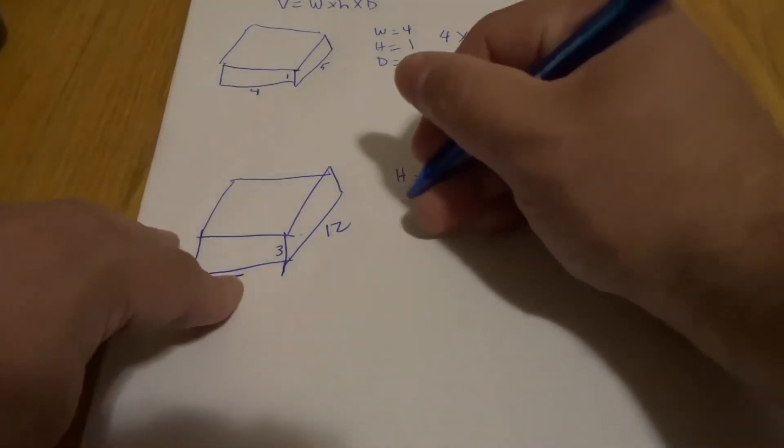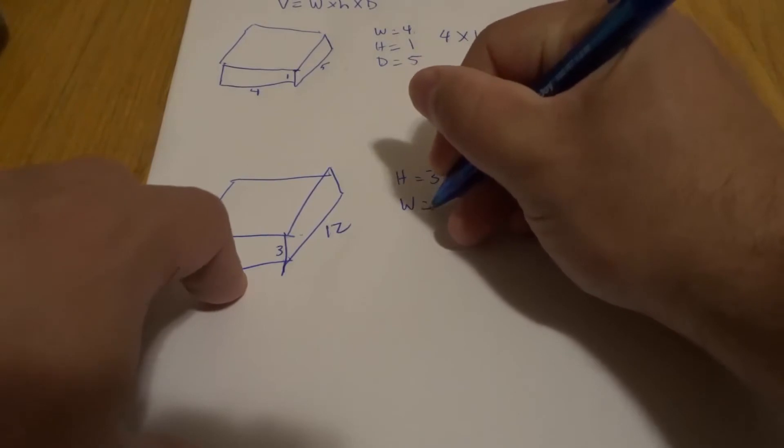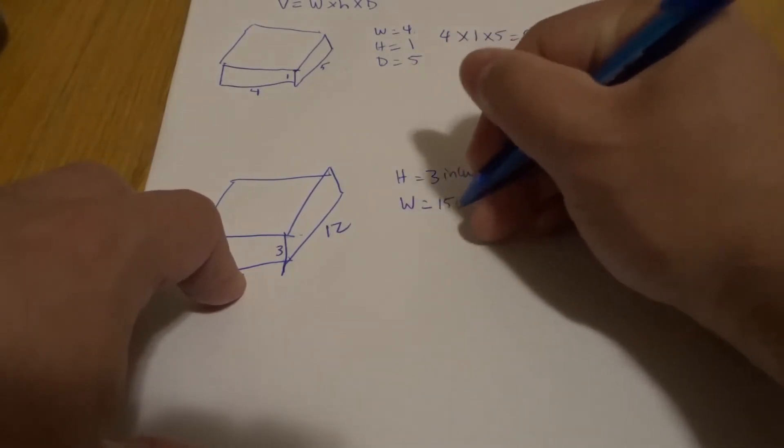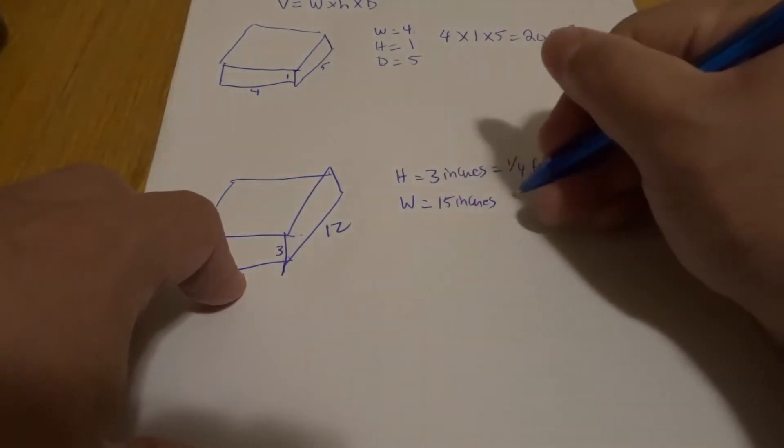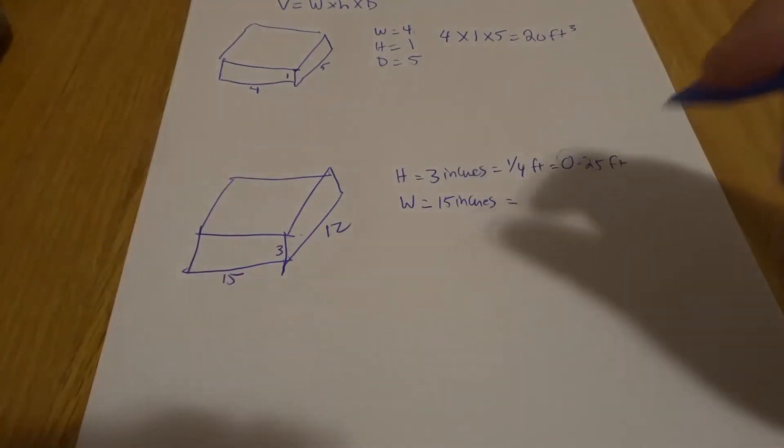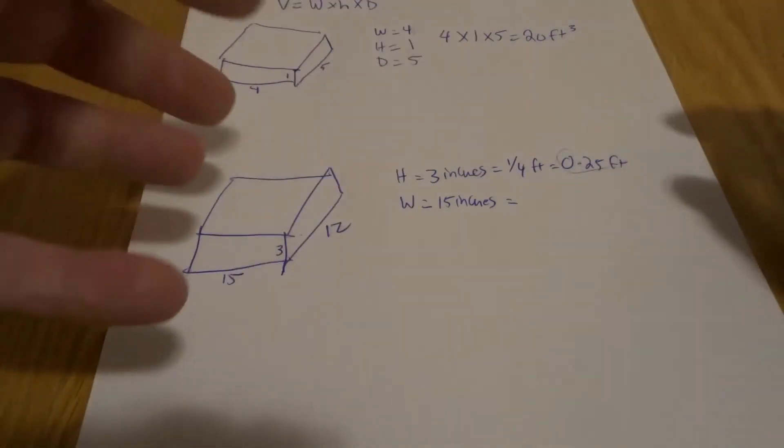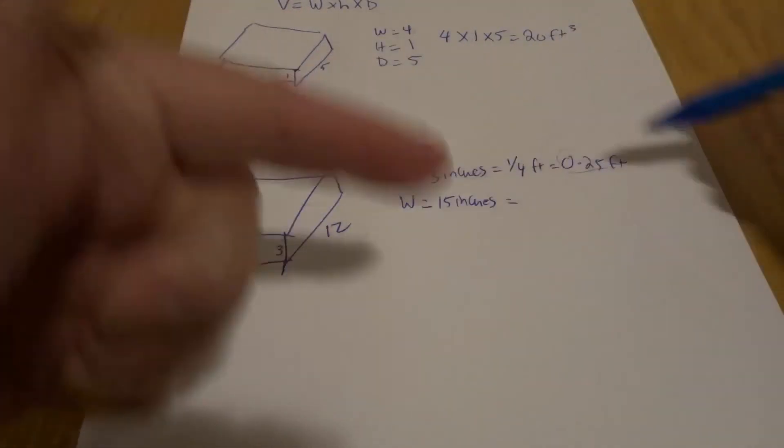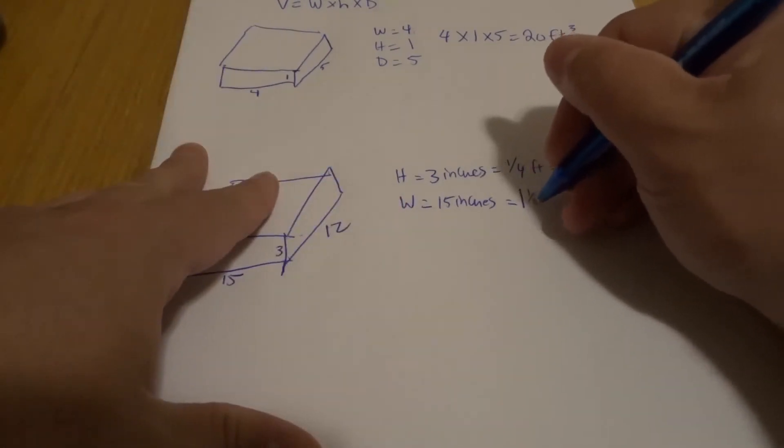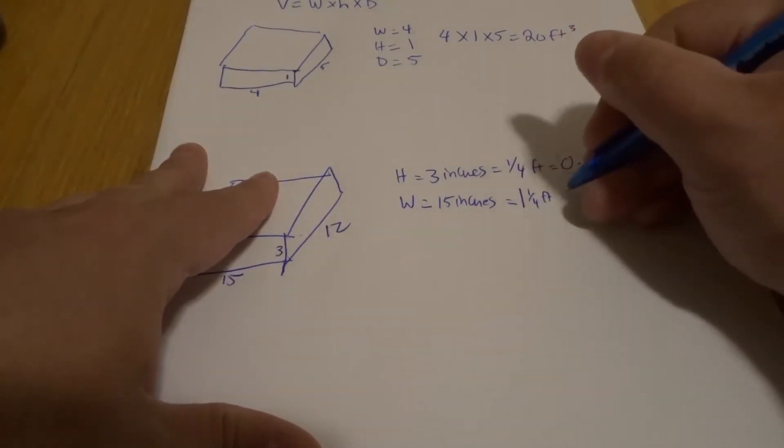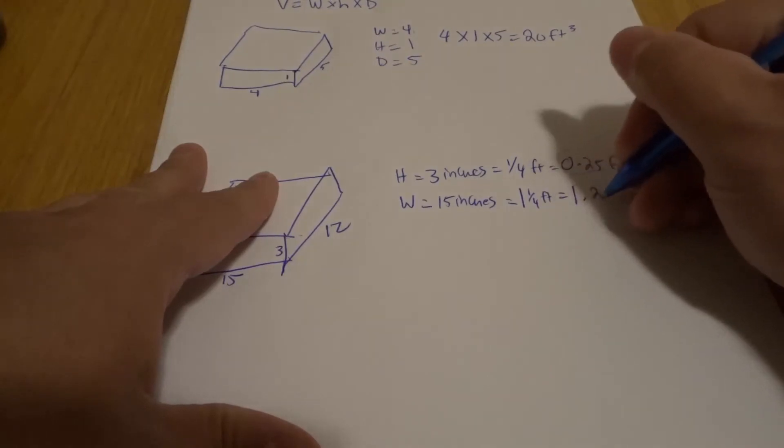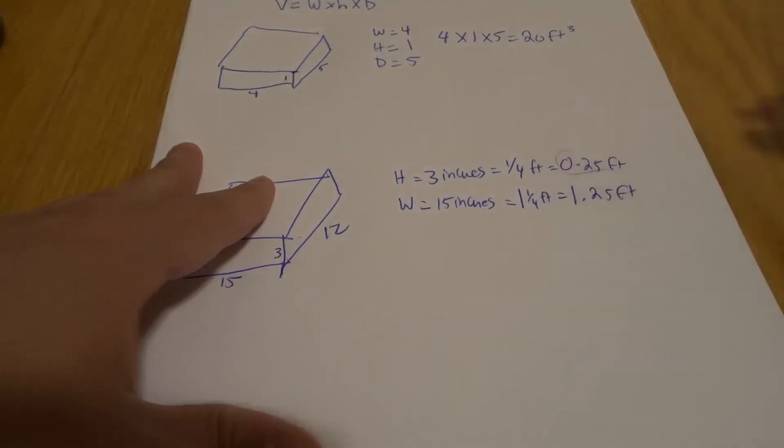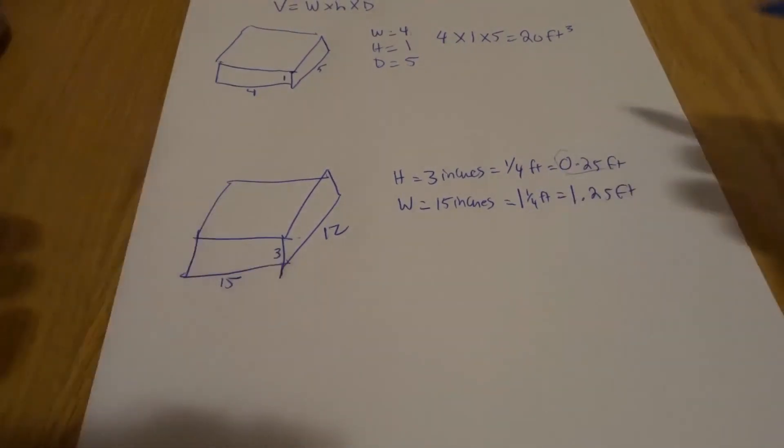Next we're going to go with our width. Our width is 15 inches, which is actually more than a foot, because a foot is 12 inches. So 15 inches is actually a foot plus three inches, so it's going to be one and one quarter feet, or 1.25 feet. That's what we're converting each of them to feet.